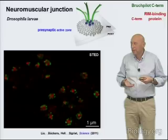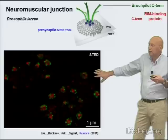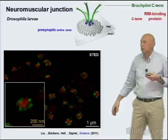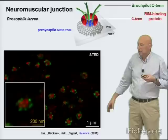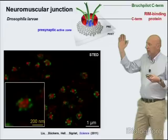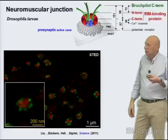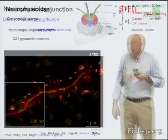STED microscopy has been used to unravel the spatial arrangement of proteins in the presynaptic active zone of the Drosophila neuromuscular junction. Certain proteins — Bruchpilot and a rim-binding protein — cannot be resolved by confocal microscopy because the resolution is insufficient, but with STED microscopy at a resolution of 30 to 40 nanometers, one can instantly get an idea of how these proteins are arranged in space. Distances of 38, 57, and 98 nanometers between different terminal ends of the proteins can be measured, helping to build a model of the presynaptic active zone.